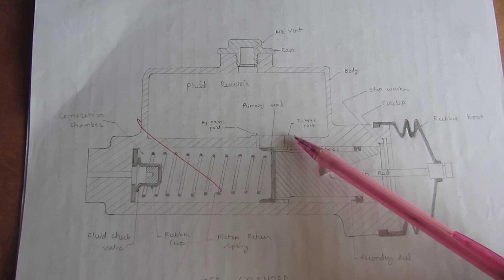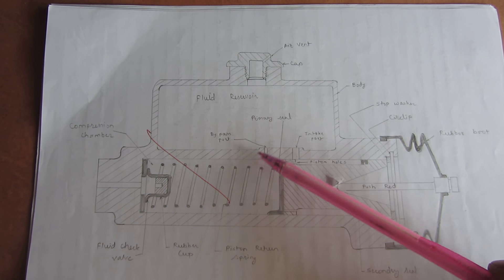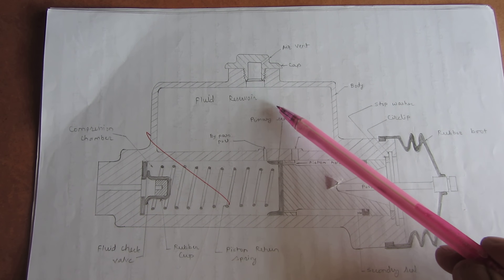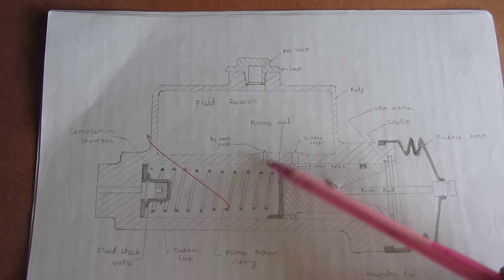The intake port has a piston hole. Intake port connects to the piston hole. When vacuum is created, the fluid inside the reservoir flows through intake port into the compression chamber. So this vacuum is filled by the fluid from the reservoir.